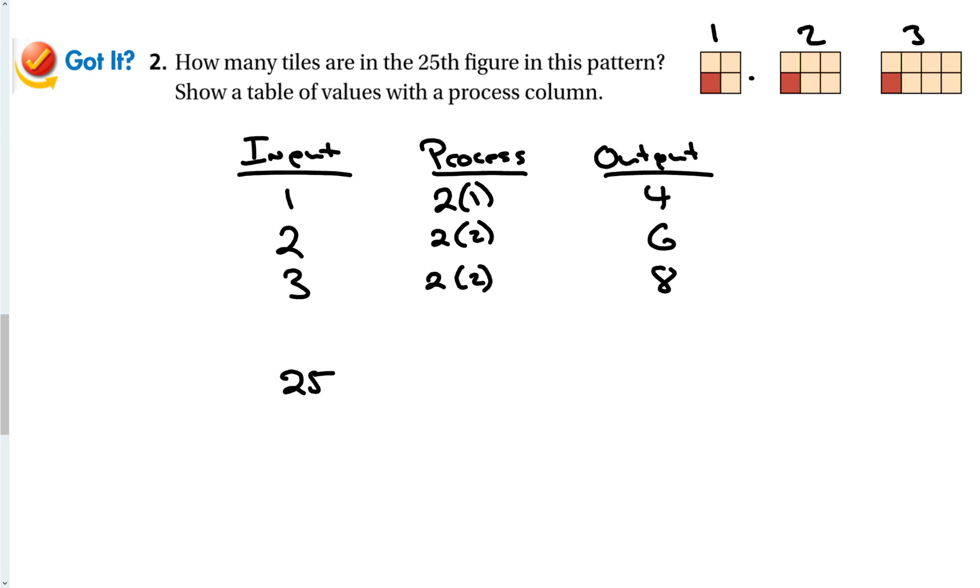All right. Right. I'm going to take two times the input because I always want to add two. All right. But two times one doesn't give me four. Two times two doesn't give me six. Oh, this was three. Two times three doesn't give me eight. But if I add two to the figure, then I have my outputs. Does my equation work for everything? Yeah. So my equation is two times n plus two, which means to get to the 25th figure, it would be two times 25 plus two, which would give me 52 blocks in the 25th figure.